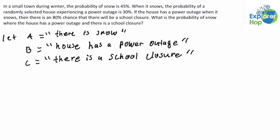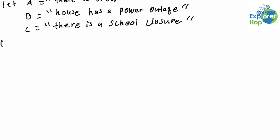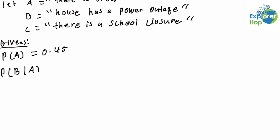Now let's write down the givens. We know that the probability that there will be snow is 45%, so the probability of event A is equal to 0.45. We're then told that the probability of a randomly selected house experiencing a power outage is 30% when it snows, so that's the conditional probability of B given A, which is equal to 0.3.